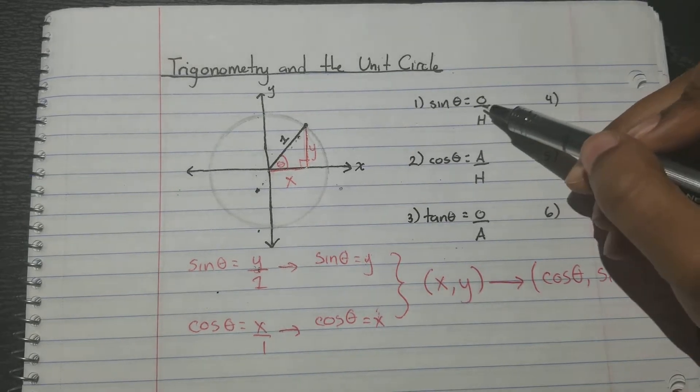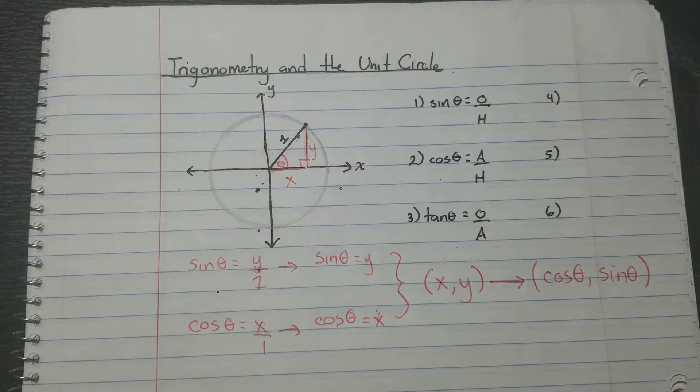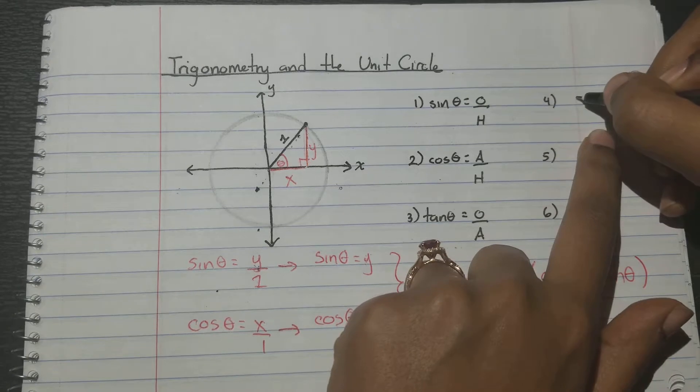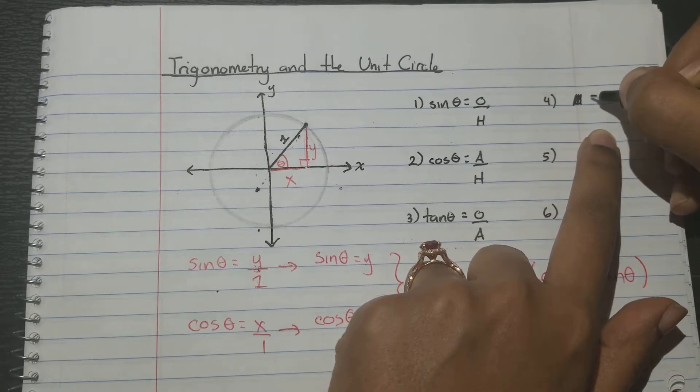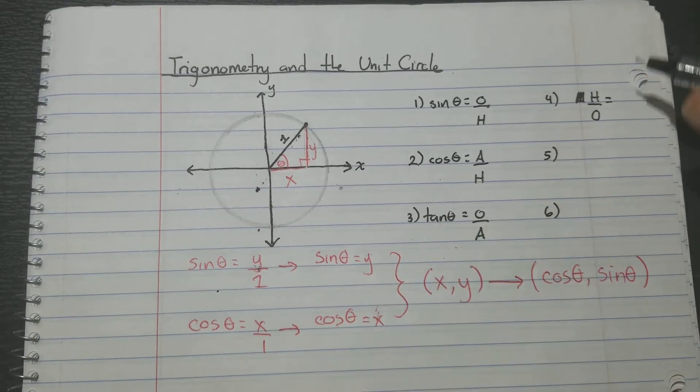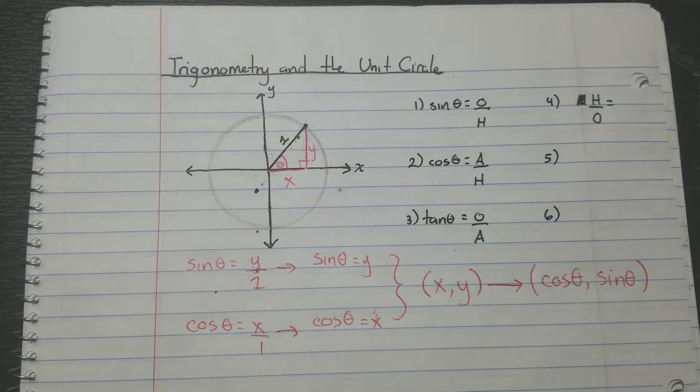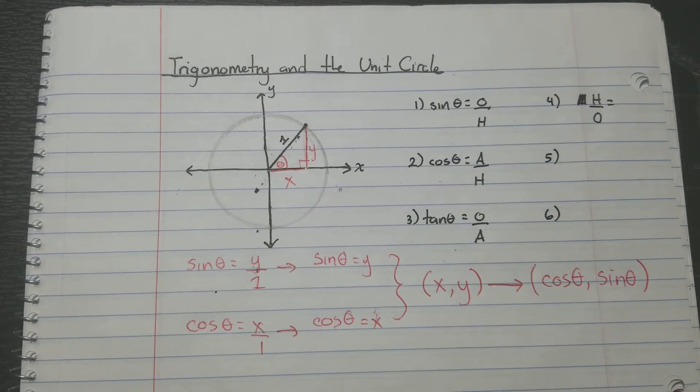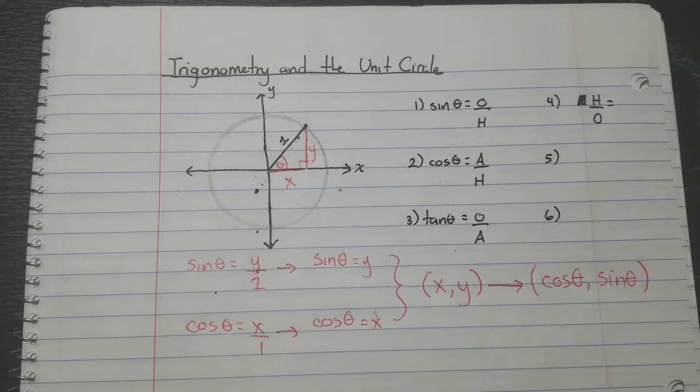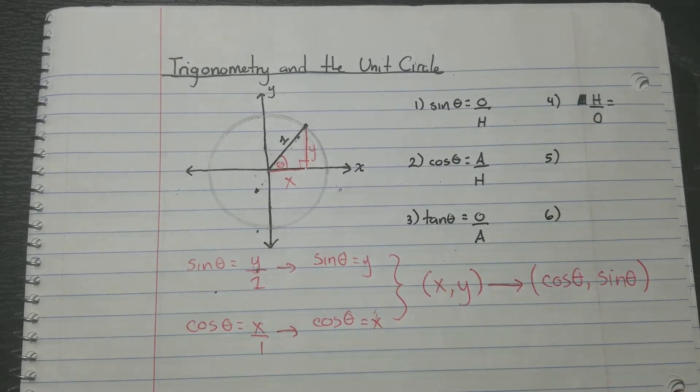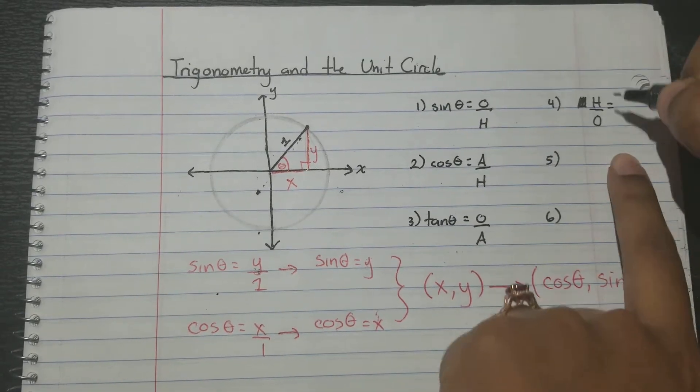So right now we have sine theta is opposite over hypotenuse. So let's say it was written as hypotenuse over opposite. Does this give us a different function? And actually, yes, it does. So when we flip the fractions of our functions, we get different trig functions.